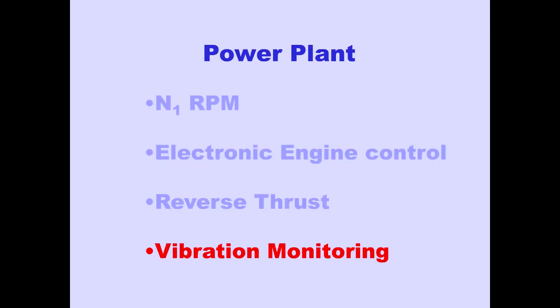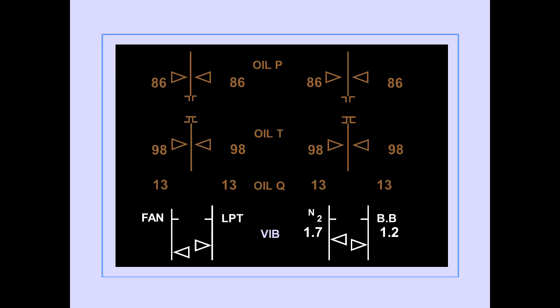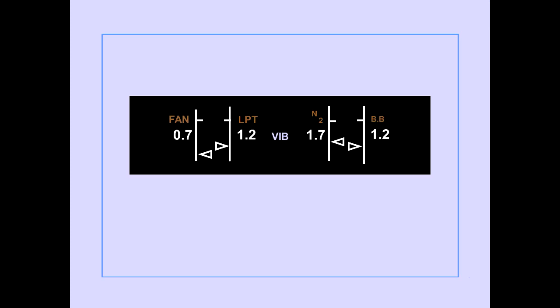Now let's discuss vibration monitoring. The vibration monitoring system monitors engine vibration levels to track rotor imbalance. Two accelerometers are located on each engine and sense vibration caused by N1 and N2 shaft rotation. Engine vibration indications are displayed on ICAS as part of secondary engine indications. Vibration level is displayed by white digital and vertical indicators; the digital indicators show numerical value, while the vertical indicators move to show relative value.